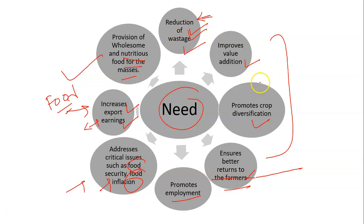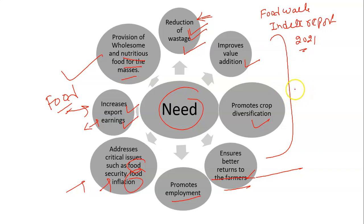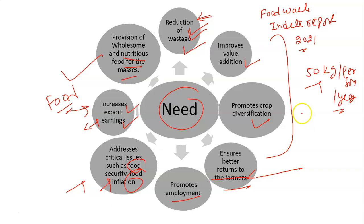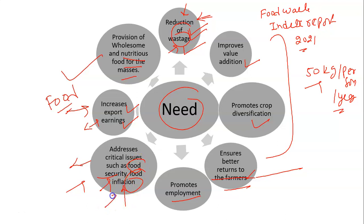As per the Food Waste Index Report 2021, a staggering 50 kg of food is thrown away per person per year in our country. This excess food waste usually ends up in landfills, creating potent greenhouse gases and having environmental implications. So if we can reduce this wastage, we can save most of the food and ensure food security and control food inflation.